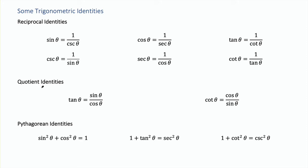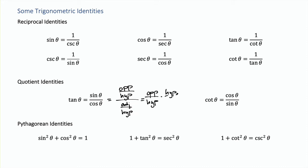We also have the quotient identities, where it turns out that tangent is actually sine divided by cosine. Sine of an angle is opposite over hypotenuse, and cosine is adjacent over hypotenuse. Dividing these fractions—flipping the denominator and multiplying—gives opposite over adjacent, which is tangent. There is a similar proof for cotangent being cosine over sine.